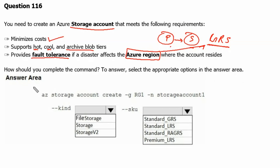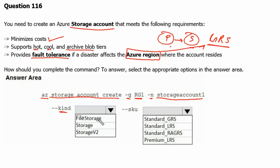In the answer area we have: az storage account create, resource group RG1, name storage-account-one, and we need to select the kind of storage and the SKU. The kind options are: FileStorage, Storage, and StorageV2. The SKU options are redundancy configurations.